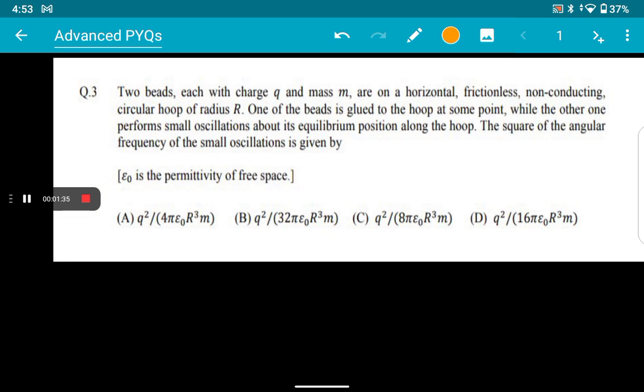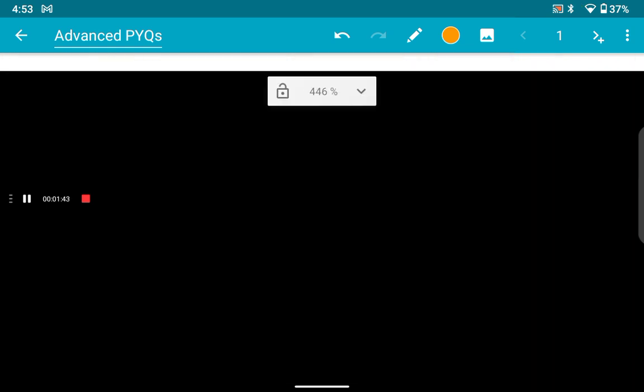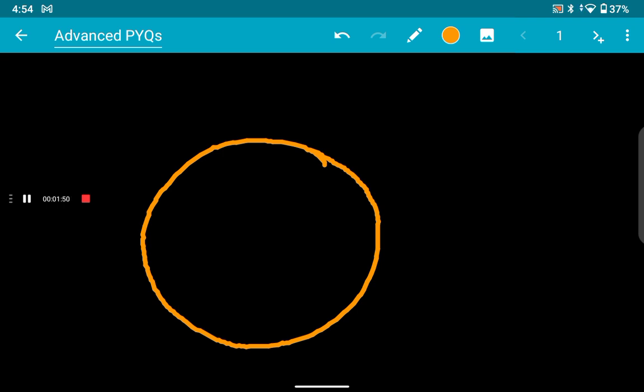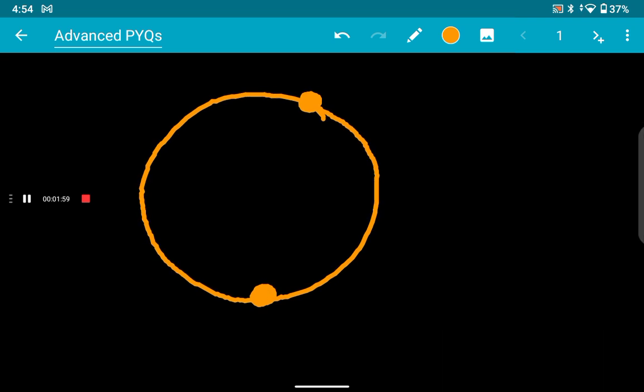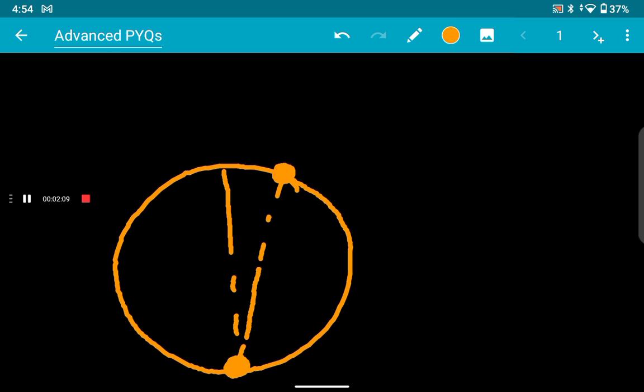I'm starting this at one and a half minutes already passed. This is basically just a simple SHM problem. Let me construct the diagram first. Here we have a ball like this, and here we have a fixed charge like this.